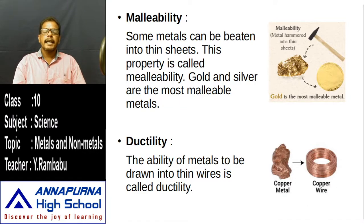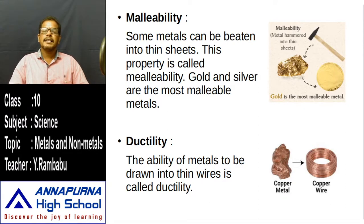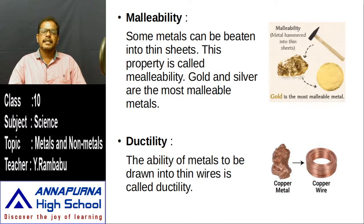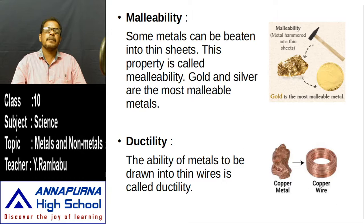We learned in ninth class that Rutherford used a thin gold foil in his experiment to discover the nucleus. The thickness of gold foil can be expressed in terms of atoms — 500 to 5000 atoms thick — it is extremely thin. Such thin foils are obtained only from metals due to their malleability.